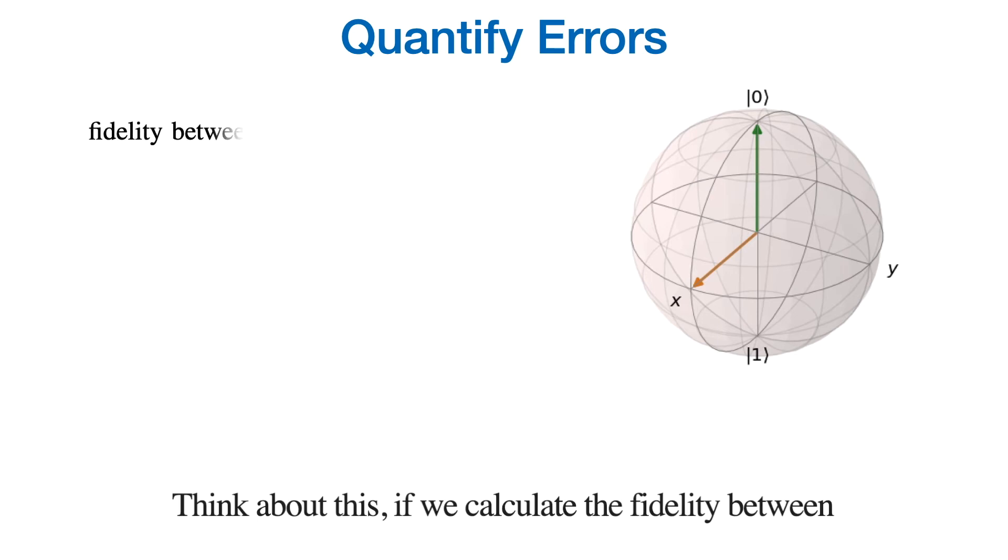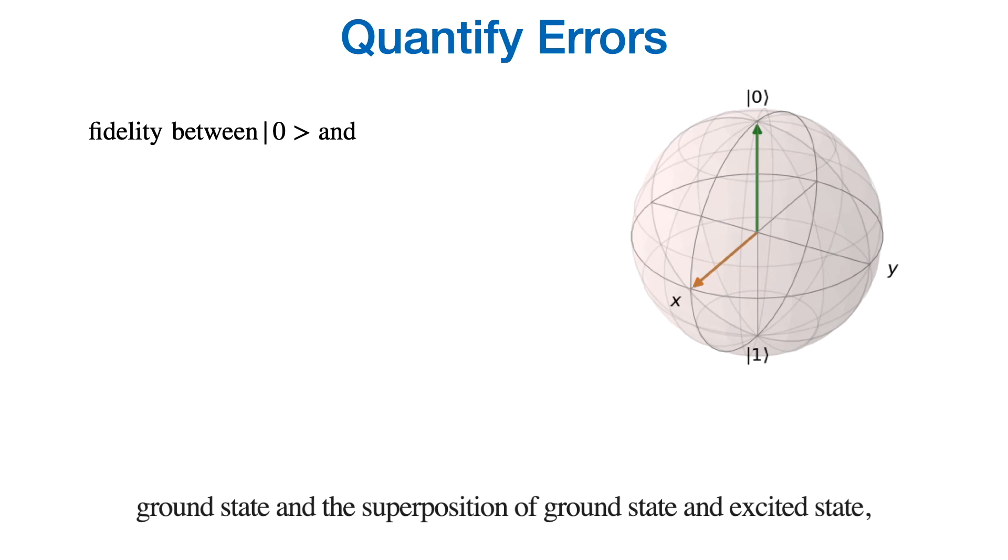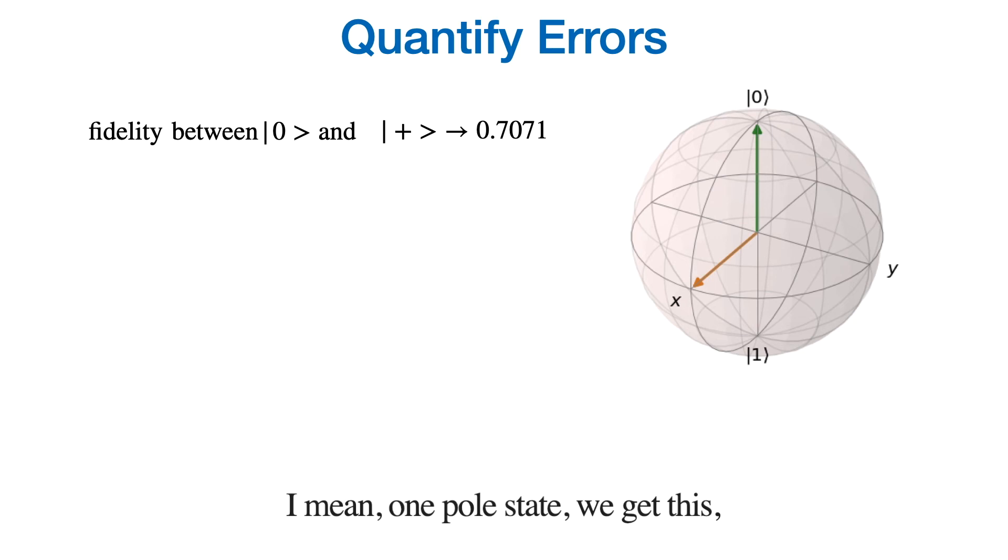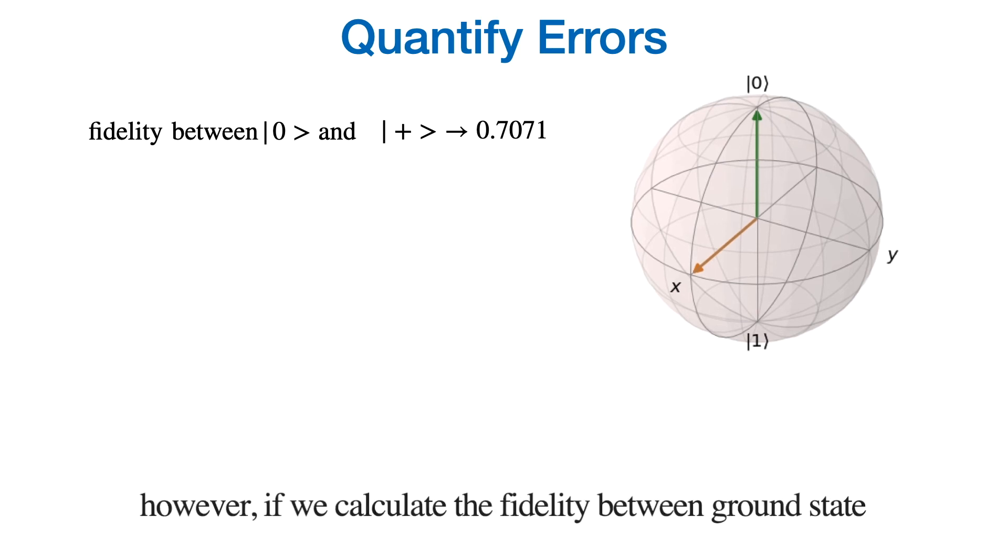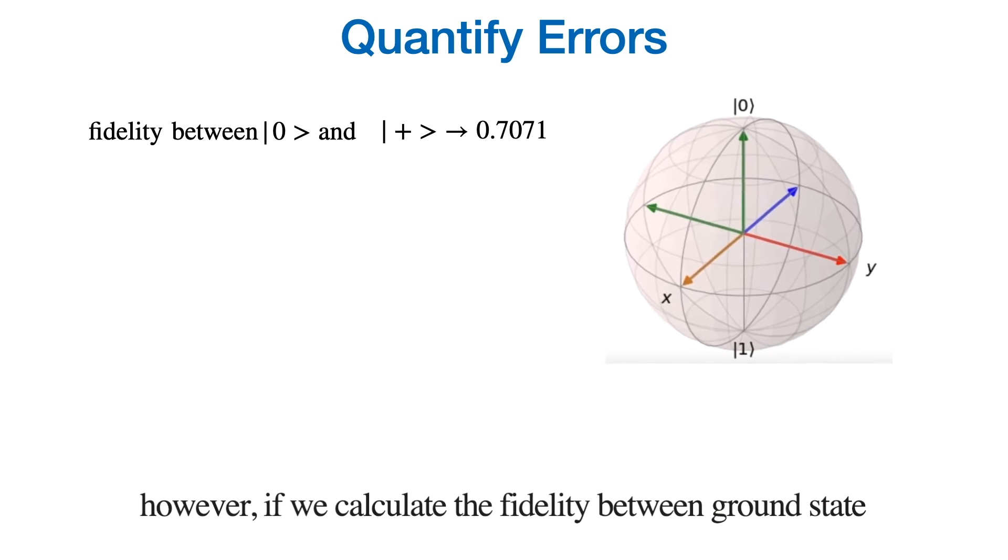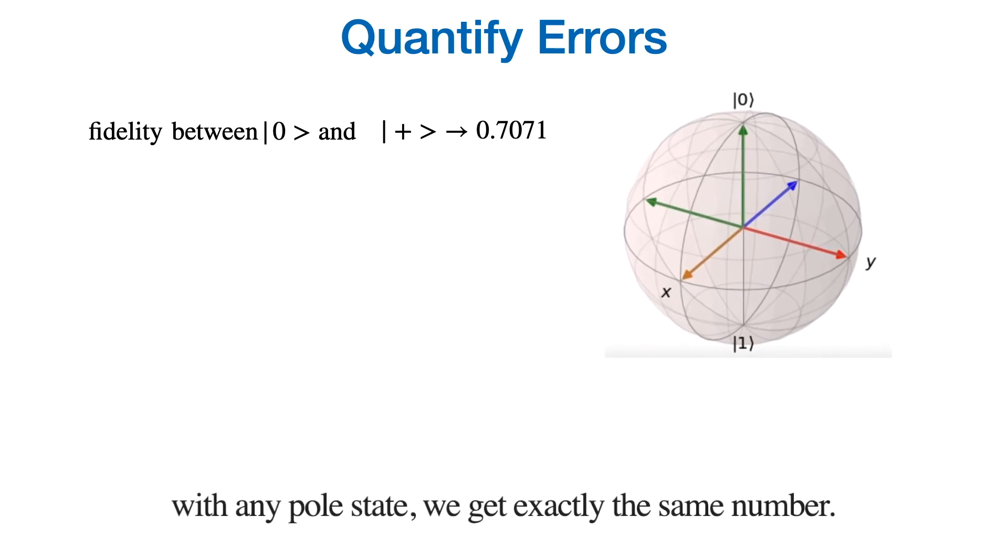If we calculate the fidelity between ground state and the superposition of ground state and excited state, I mean one Pauli state, we get this. However, if we calculate the fidelity between ground state with any Pauli state, we get exactly the same number.